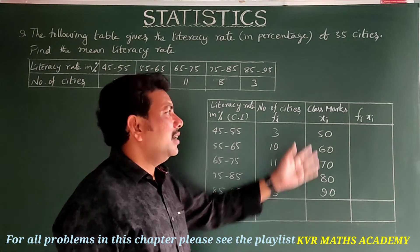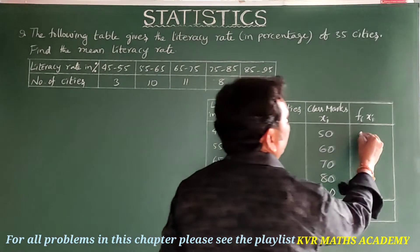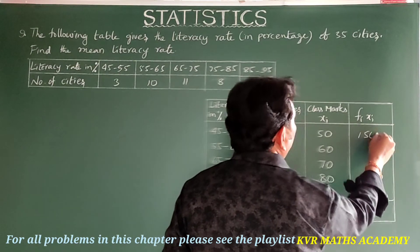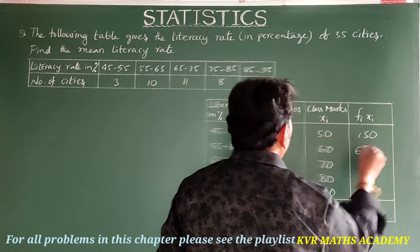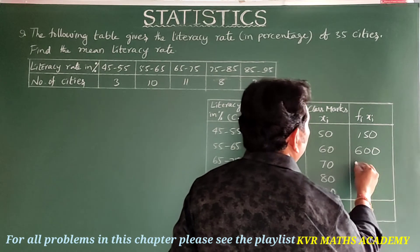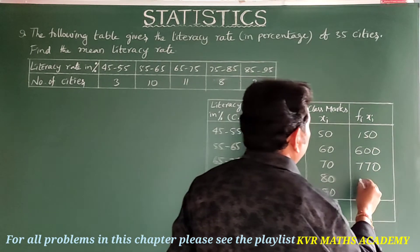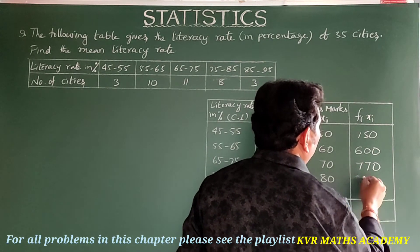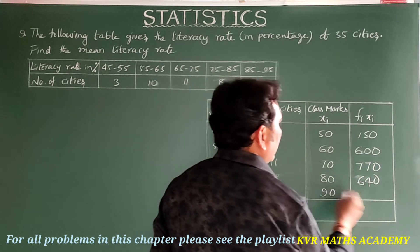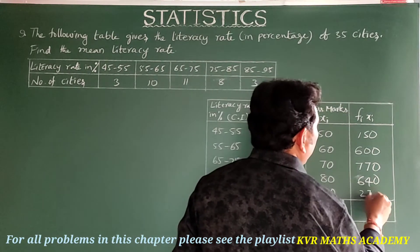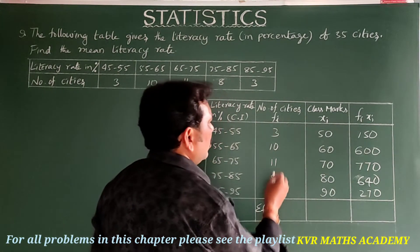Next, fi·xi: 3×50 = 150, 10×60 = 600, 11×70 = 770, 8×80 = 640, and 3×90 = 270. Σfi is equal to 35, as already given — there are 35 cities.